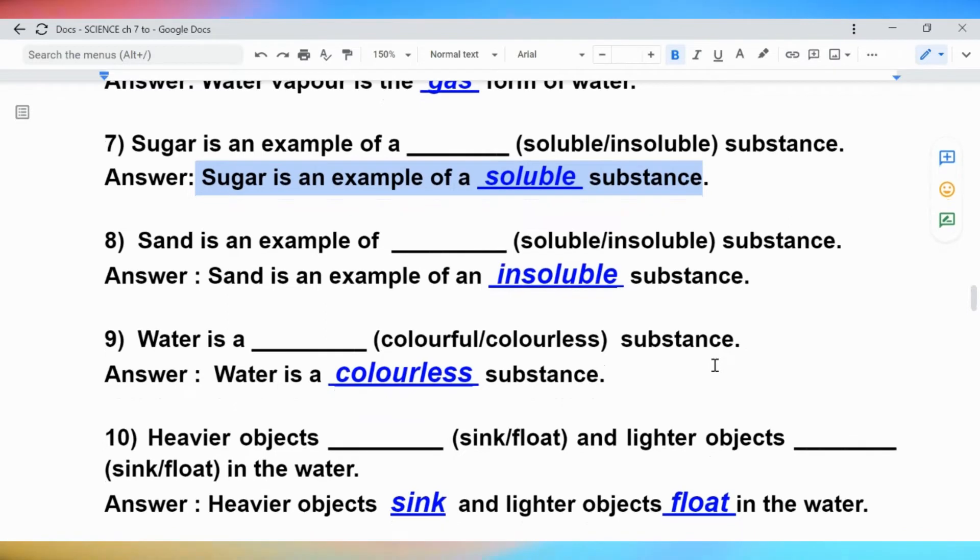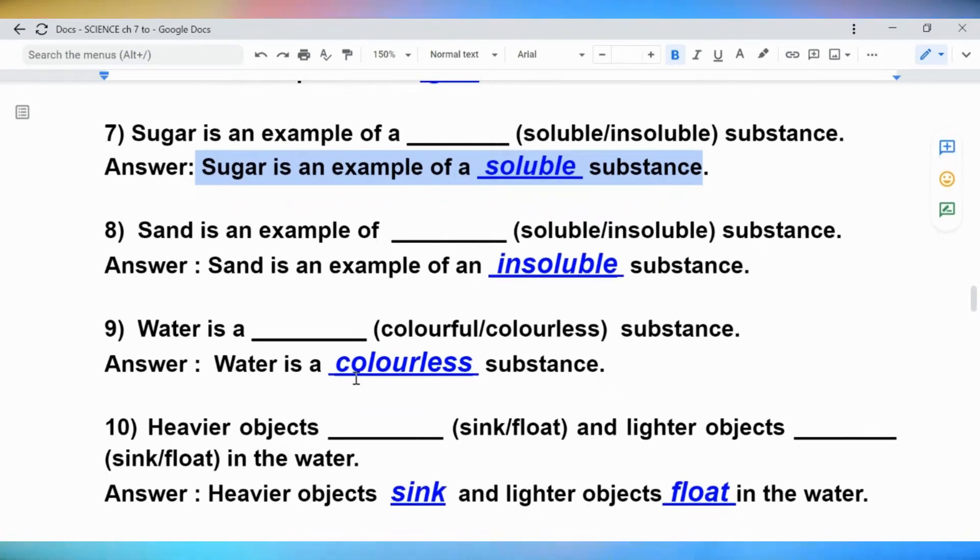Question 8: Sand is an example of blank (soluble/insoluble) substance. Answer: Sand is an example of an insoluble substance.